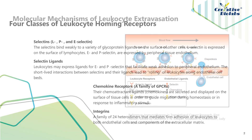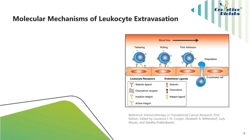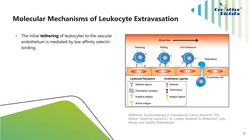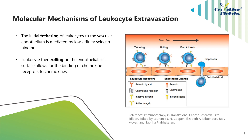This picture shows the molecular mechanisms of leukocyte extravasation. The initial tethering of leukocytes to the vascular endothelium is mediated by low-affinity selectin binding. Leukocytes then roll on the endothelial cell surface, allowing the binding of chemokine receptors to chemokines. Finally, firm adhesion of leukocytes to the endothelial bed is mediated by integrins, which allows for leukocyte diapedesis into the interstitial space.